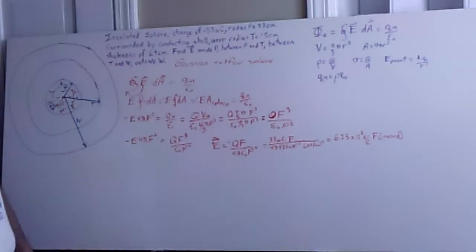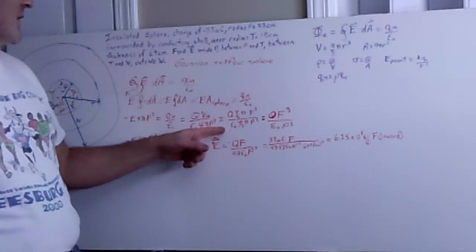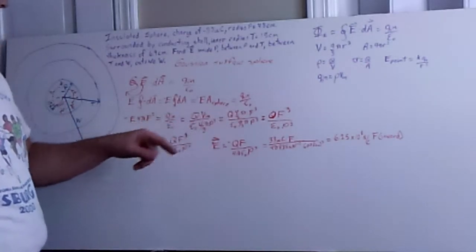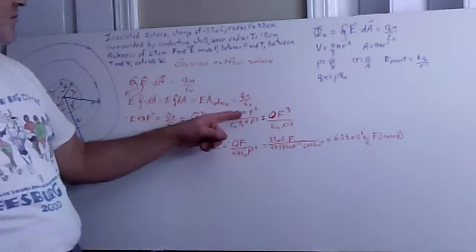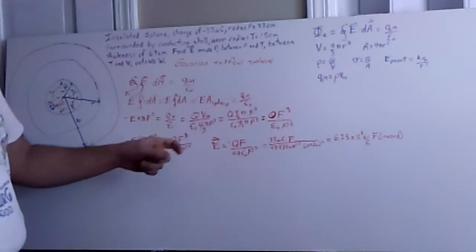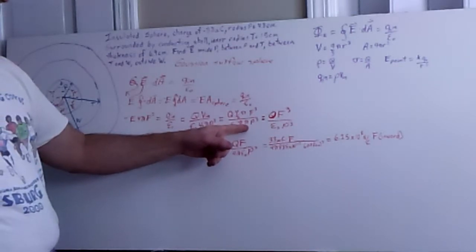And multiply that by the volume that's inside of our insulated sphere that we're trying to figure the electric field at that point. And so we go ahead and plug in the volume of our sphere that we're using for a Gaussian surface, and that's 4 thirds pi f cubed, and then we're dividing that by 4 thirds pi p cubed.